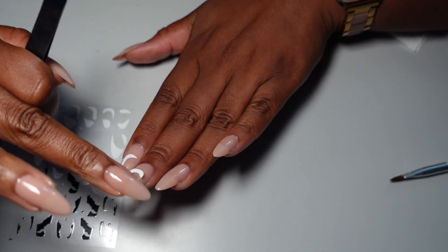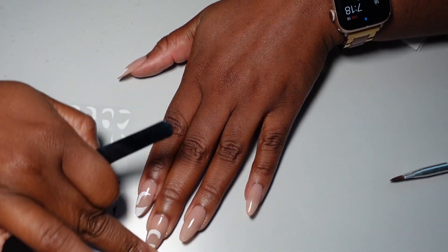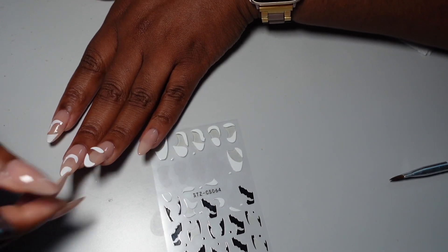I know I don't. So I apply each sticker to the finger, doing one finger and one hand at a time. And then once I do that, then I'm going to go in with the Beetles top coat.